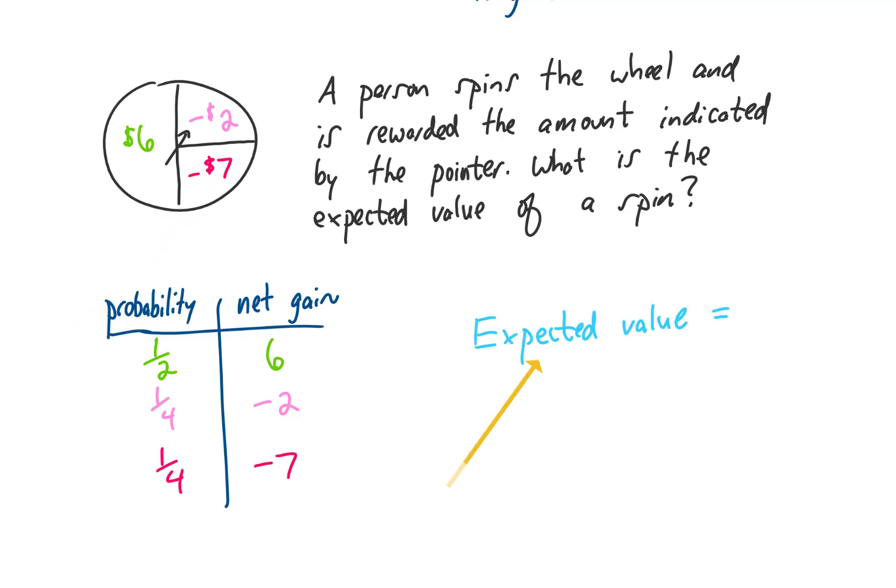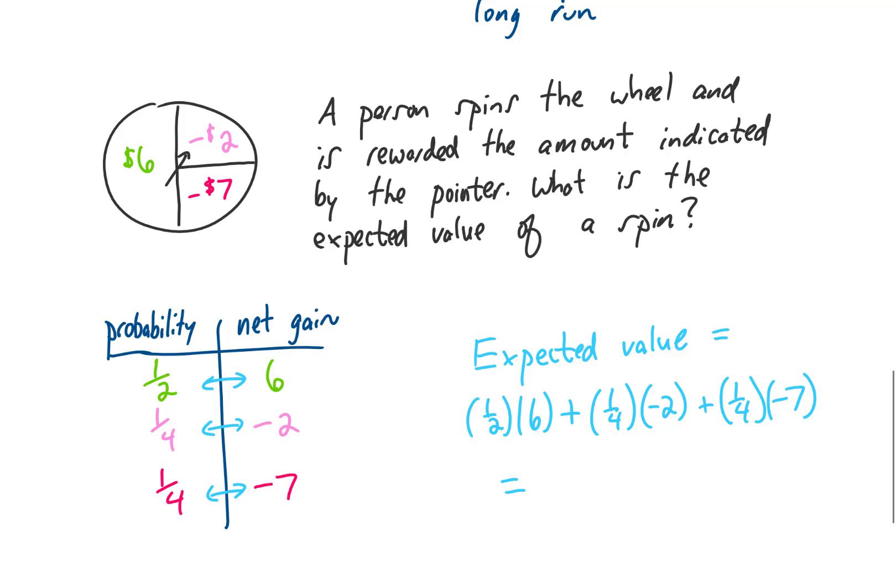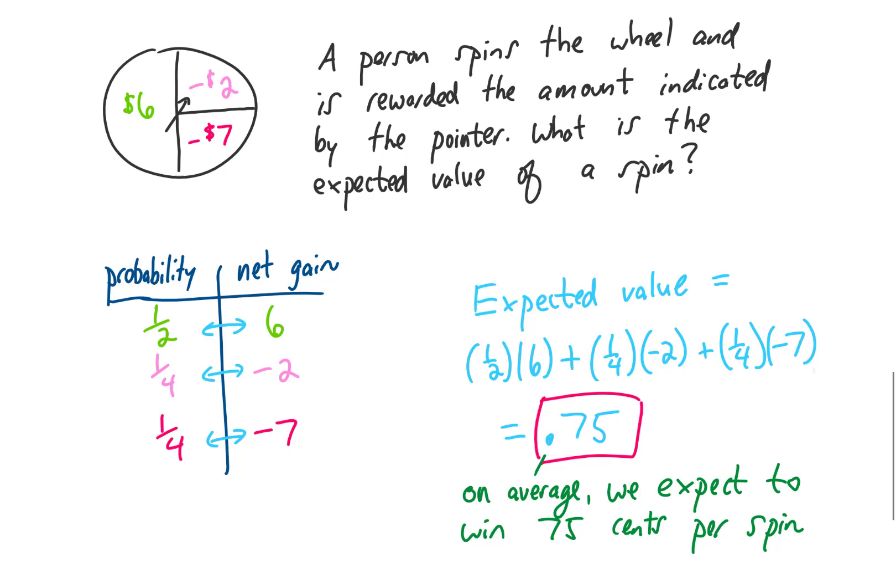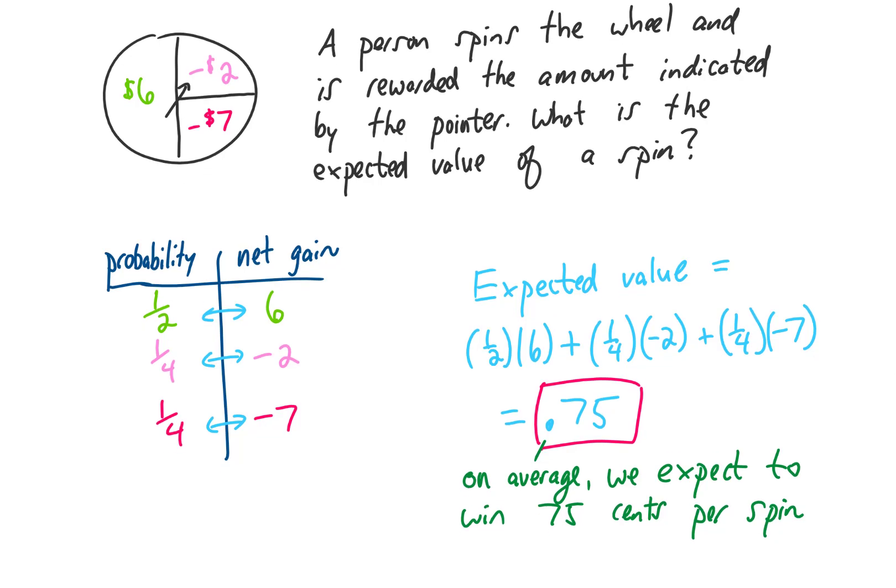Again, to find the expected value, we multiply each of our probabilities by our net gain or loss. We add those results up and we get an answer. I'm getting an expected value of 0.75. Let's interpret that result. Well, an expected value of 0.75 says that on average, we expect to win $0.75 per spin.